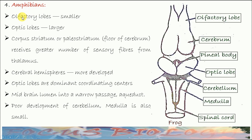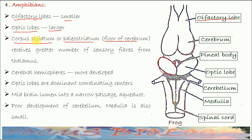Now, amphibian brain. This is the structure of the amphibian brain. The olfactory lobes are smaller. Optic lobes are larger. Corpus striatum, also called paleostriatum, is the floor of the cerebrum. It receives a large number of sensory fibers from the thalamus, i.e. diencephalon. Cerebral hemispheres are more developed.